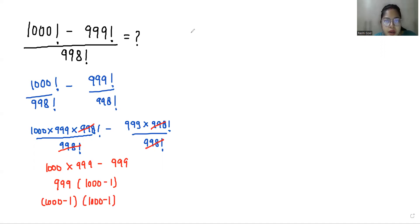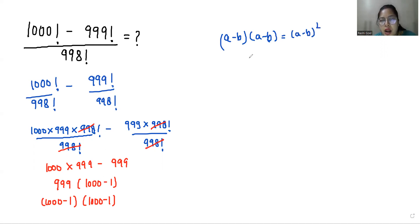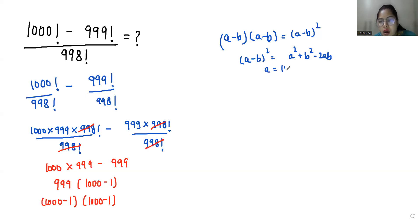So it becomes (a minus b) times (a minus b), which equals (a minus b) whole square. The formula of (a minus b) whole square is a squared plus b squared minus 2ab, where a is 1000 and b is 1.